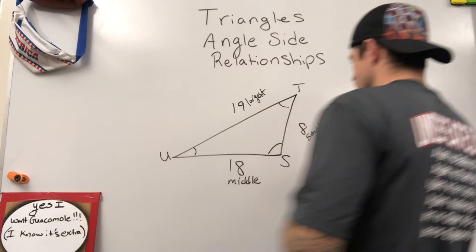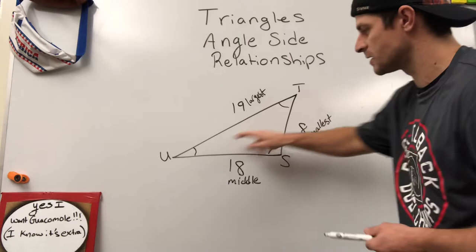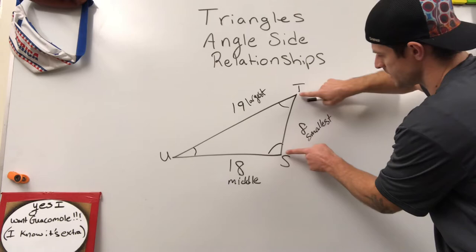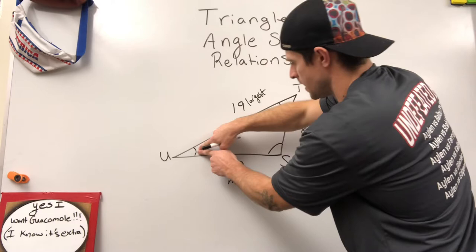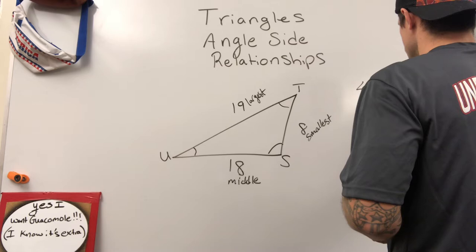All right, so smallest side length. Okay, to determine which of these three angles would be the smallest, you just want to go to the opposite angle in the triangle. So here's our side ST and we're going to go across here, ST we're going to go across, opposite angle is U. So angle U is our smallest angle.